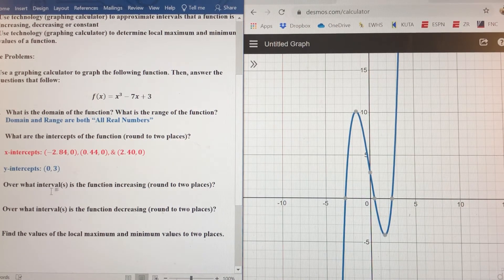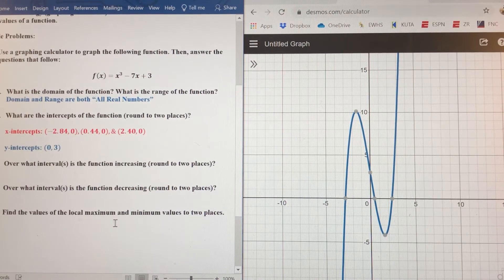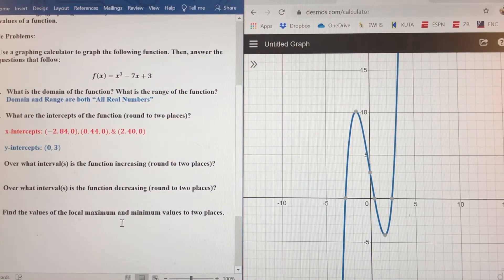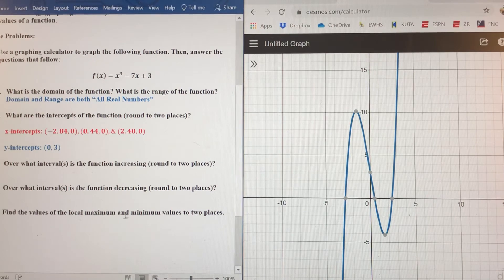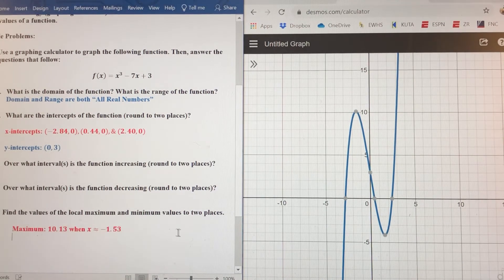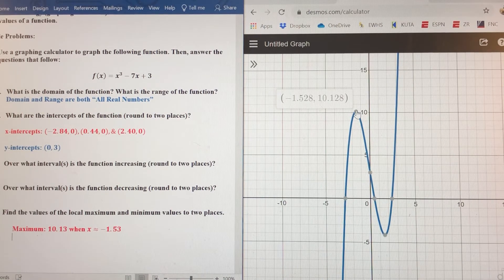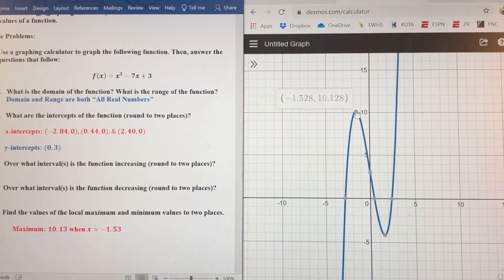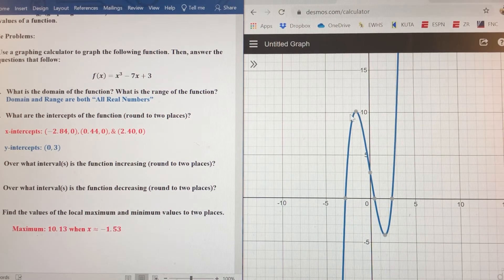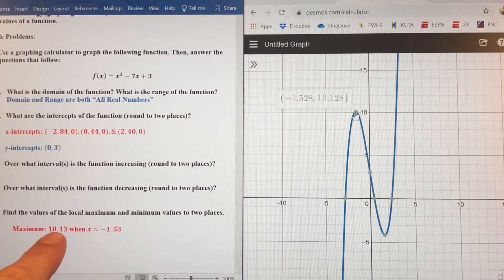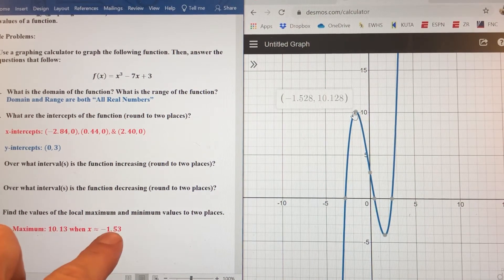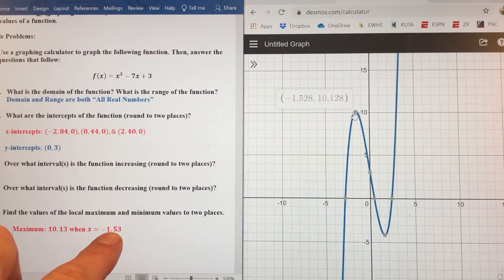I'm actually going to skip over the increasing and decreasing intervals for now. I'm going to skip on down to the local max and min values because we're going to use those values to actually show us a little more precisely increasing and decreasing. So let's do the local maximum value first. So you've noticed here the max. Remember, that's always going to be the y-coordinate, the vertical coordinate here. So it's going to be 10.13 approximately. Notice 10.13 here when the x value is negative 1.53.